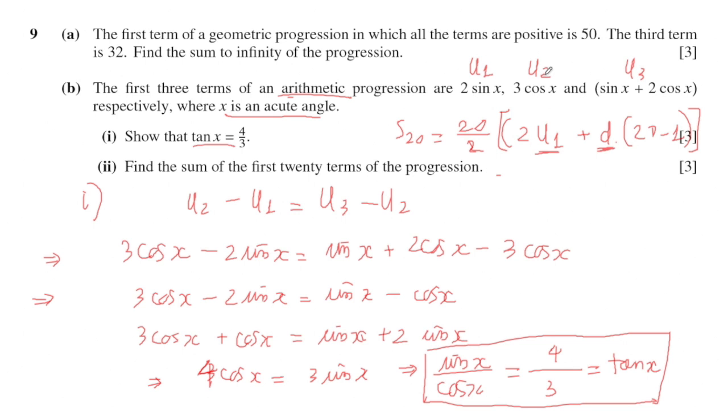I will change both terms of this progression to specific numbers. You know that tan x equals 4 over 3. Using your calculator, you will find x by inverse tan of 4 divided by 3, and you get approximately 53.1 degrees. After that, you will substitute the value for x in the terms.